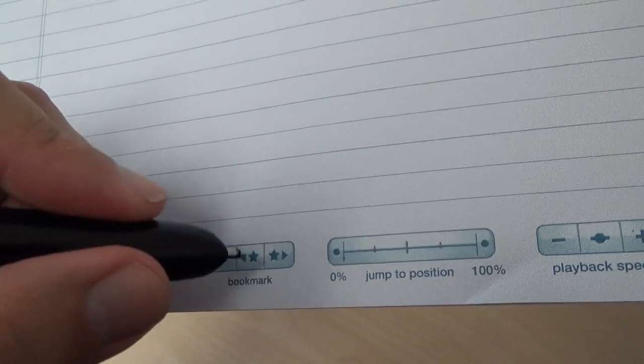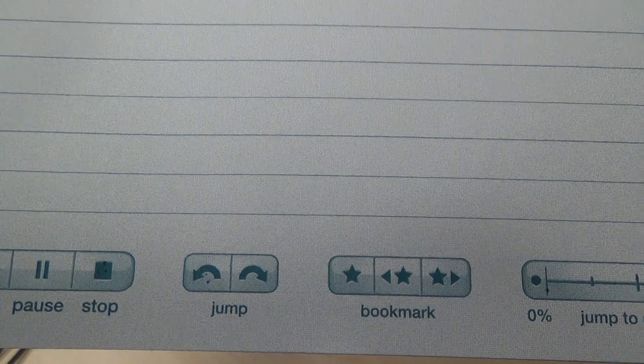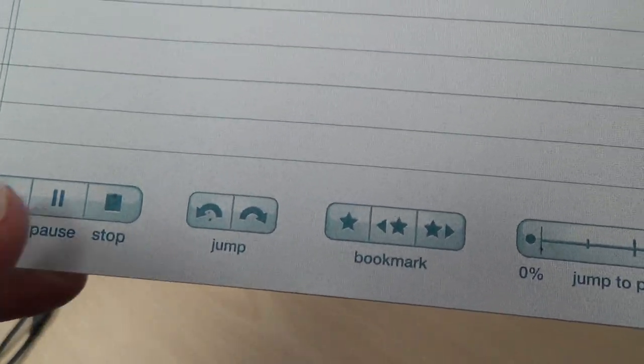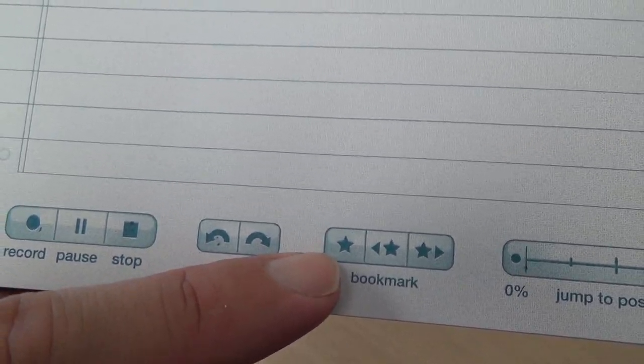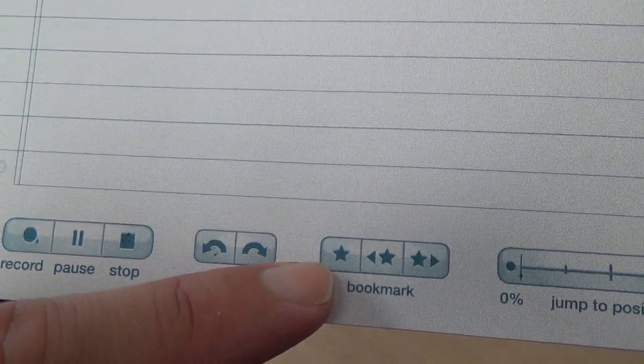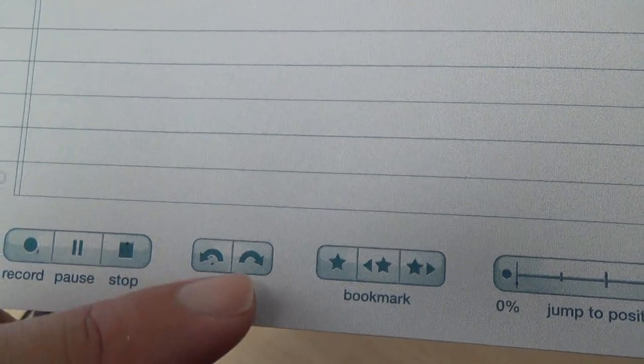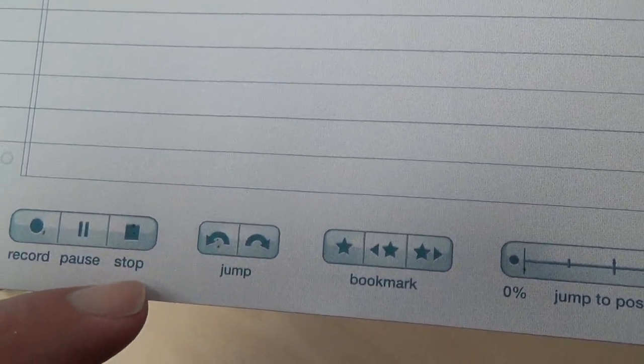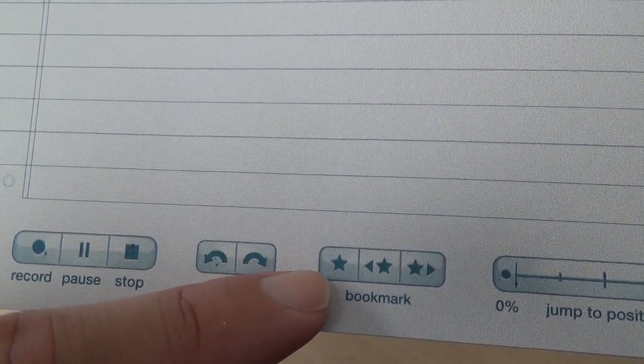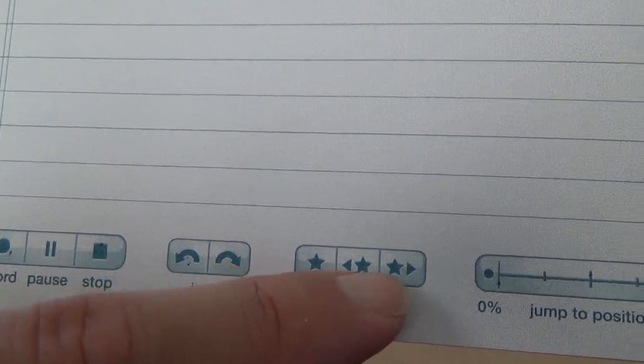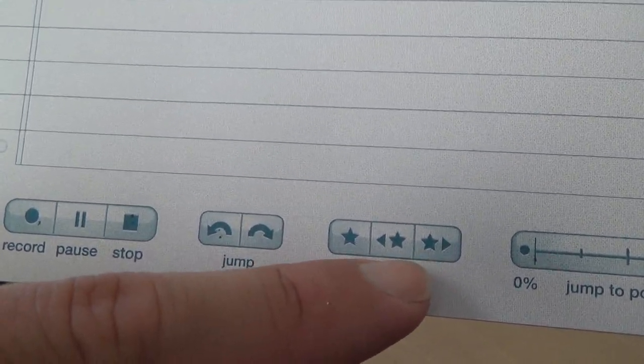The bookmarks, I kind of skipped this one because this one's a little bit more involved. This is something that you can use in the class. If your teacher says something really important, you can just hit that star and it will leave a little notch in your timeline. Once you have bookmarks in there, you'll be able to use these buttons to jump around between the different bookmarks.